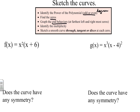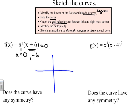First, let's find the zeros. We set the function equal to zero and identify that we have a zero at zero and also at negative six, by looking at each one of these linear factors. From here we're going to plot these zeros on a little graph — one at zero and one at negative six.